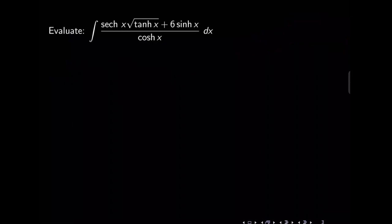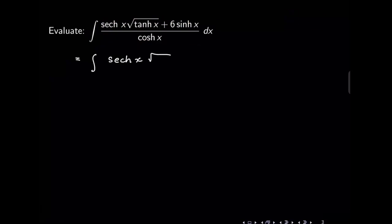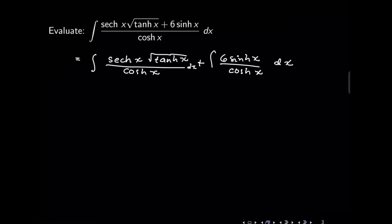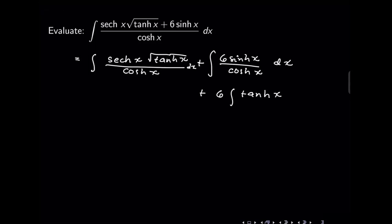Next, let us look at the integral involving hyperbolic functions. Since there is only one term in the denominator, I will distribute to separate the expression into two terms. This gives: sech x times hyperbolic secant tangent over cosh x, plus 6 sinh x over cosh x. I will integrate term by term. Now, sinh x over cosh x is tanh x, so the second term is 6 times the integral of tanh x, which equals 6 ln of cosh x.